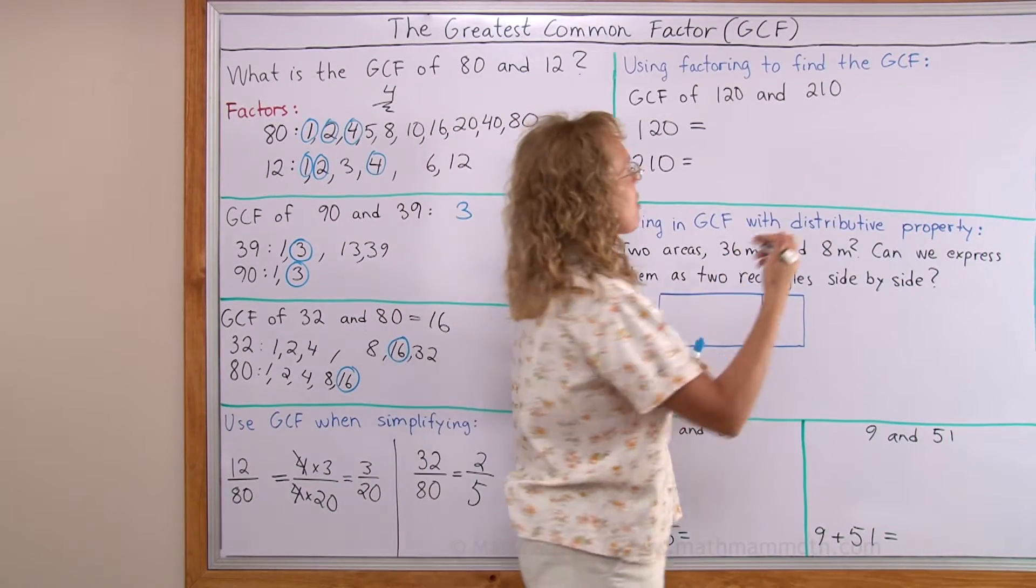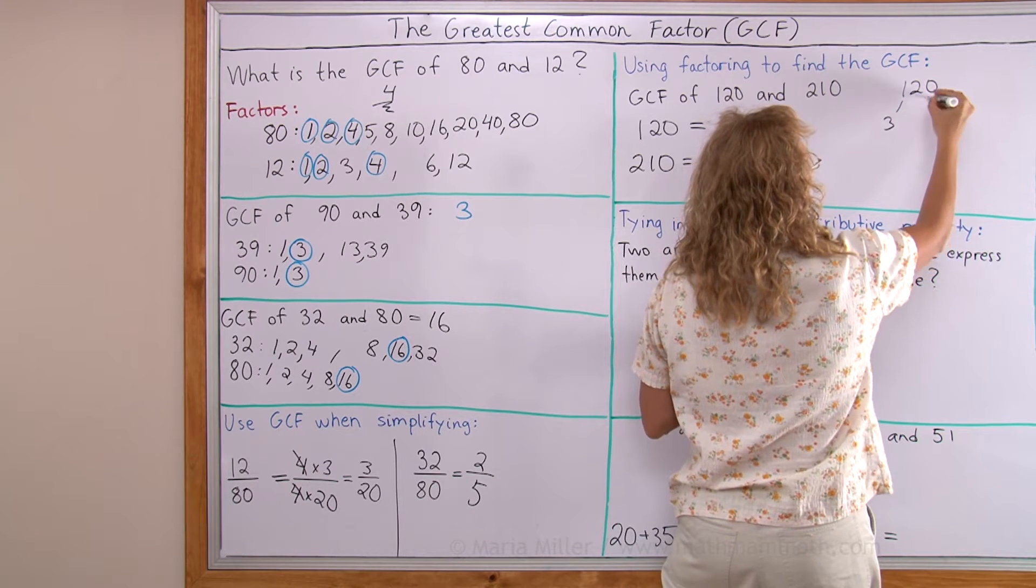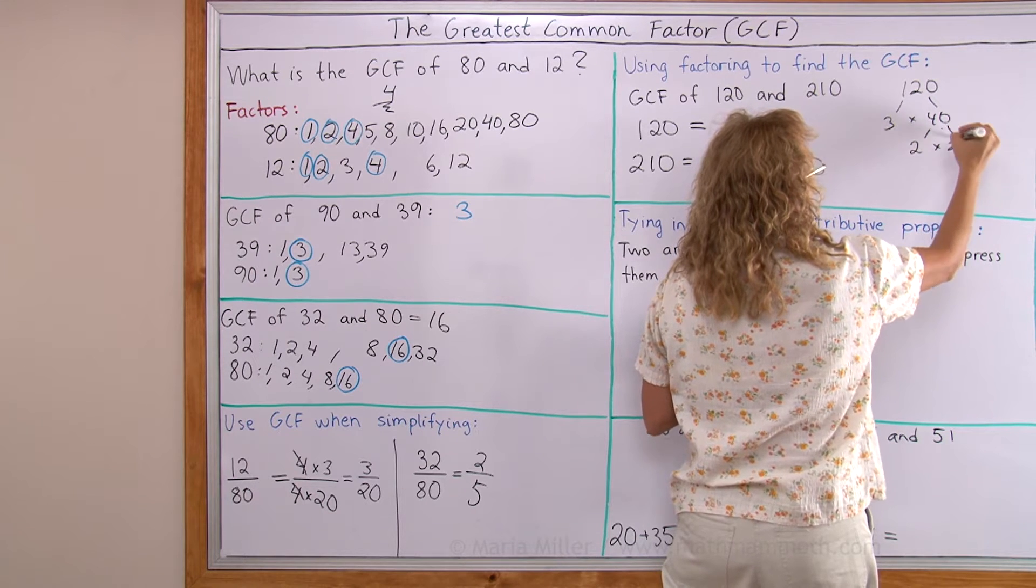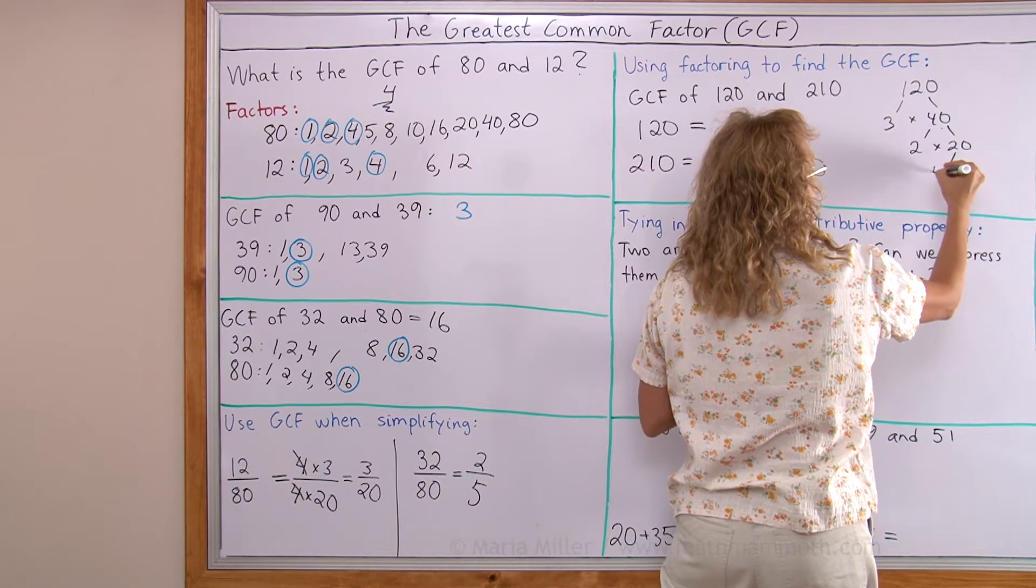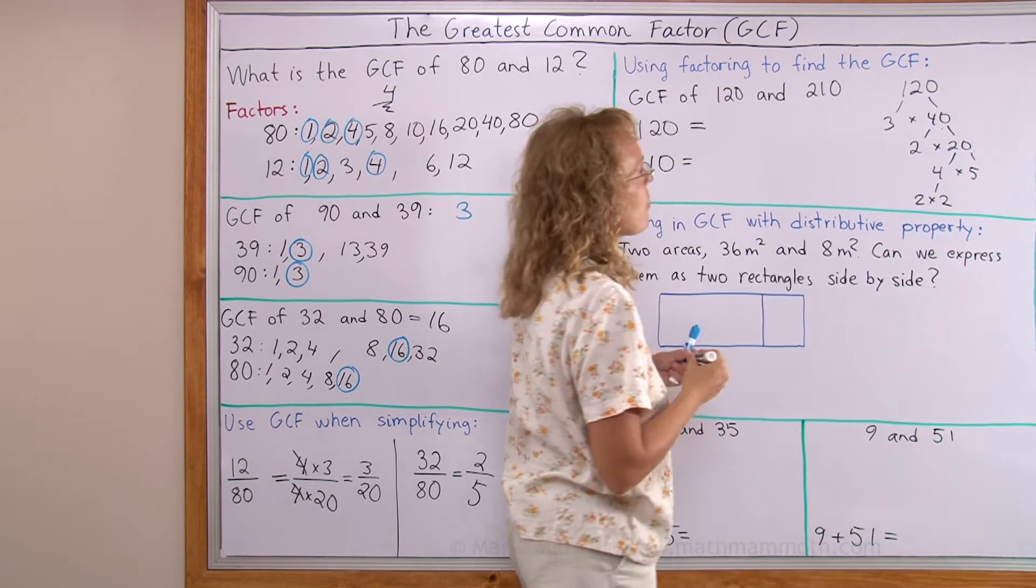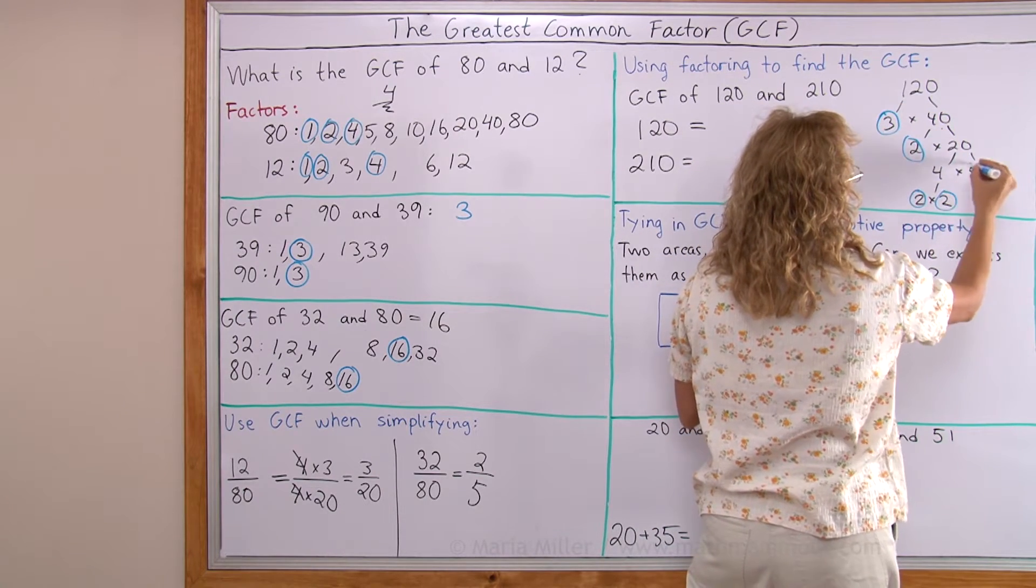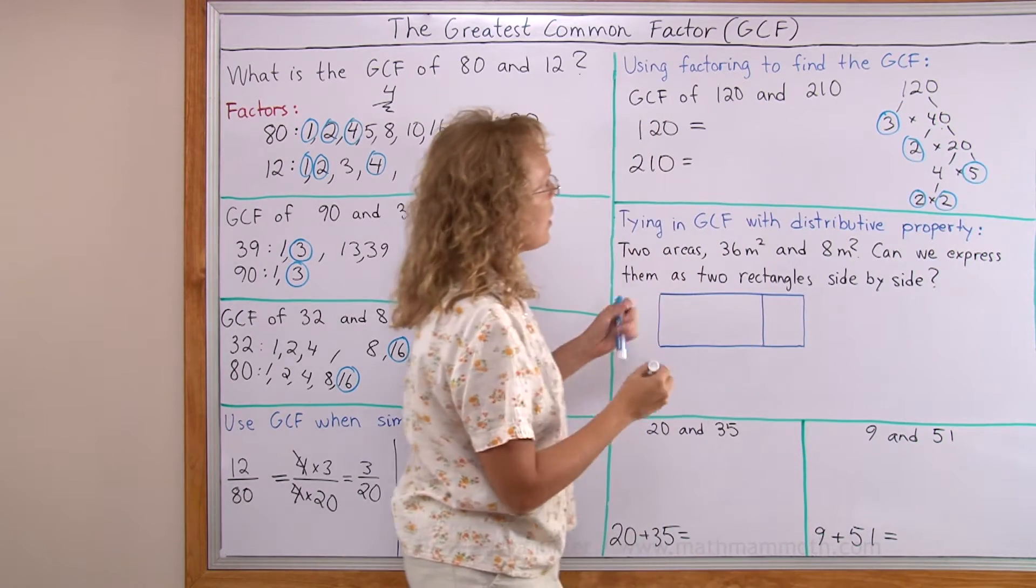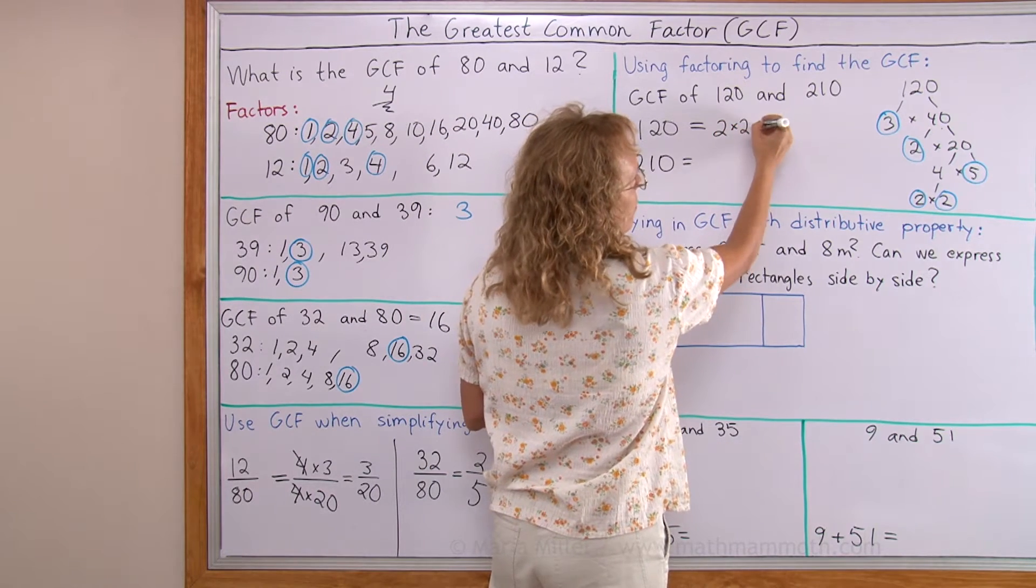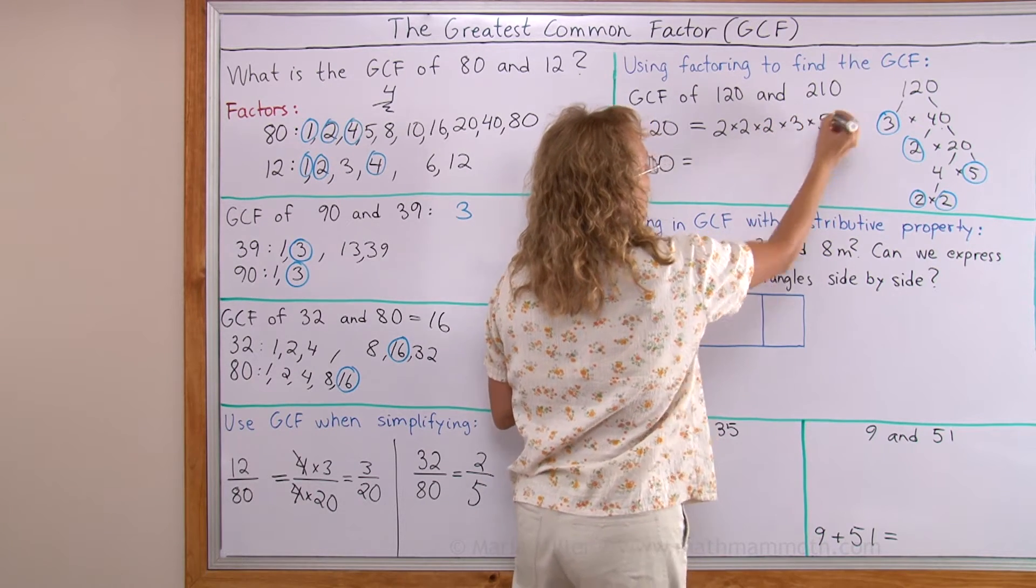So let me find the prime factorization of 120 here using the factor 3. We get 3 times 40 and then 2 times 20 and then over here 4 times 5 and then 2 times 2. So I have 3, 2, 2, 2, 2 and 5. That makes the prime factorization to be 2 times 2 times 2 times 3 times 5.